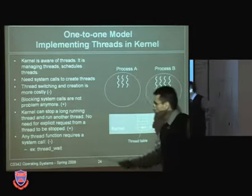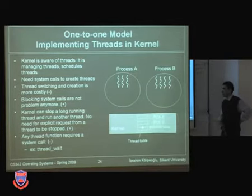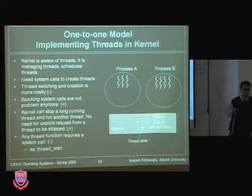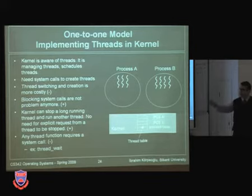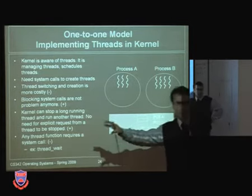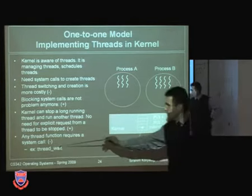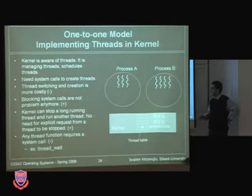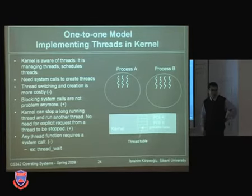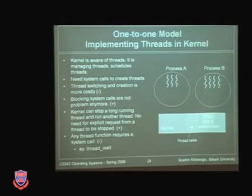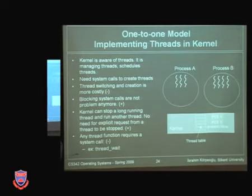However, any thread function you use in a multi-threaded application requires a system call. For example, a thread wait function — similar to the wait system call for child processes — requires jumping into the kernel. All these thread functions are more costly to execute because each requires a system call into the kernel.